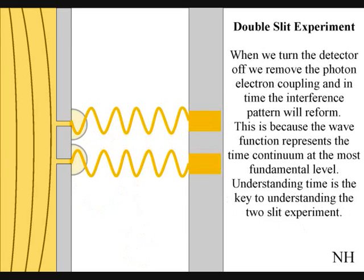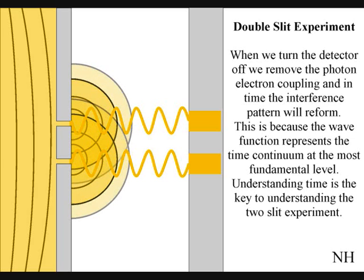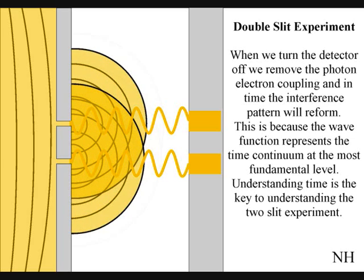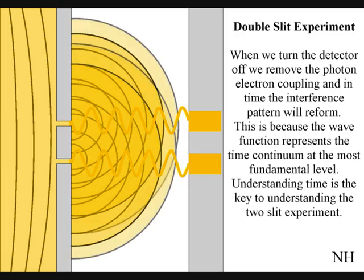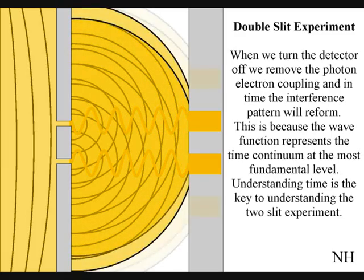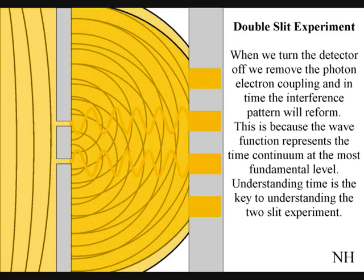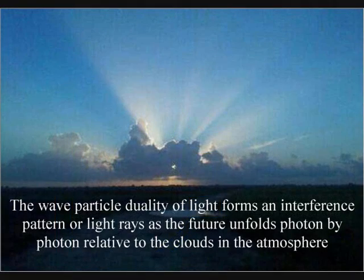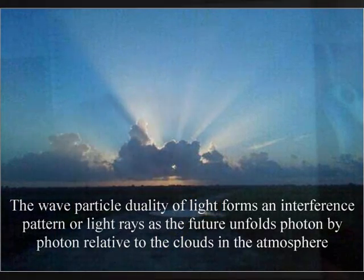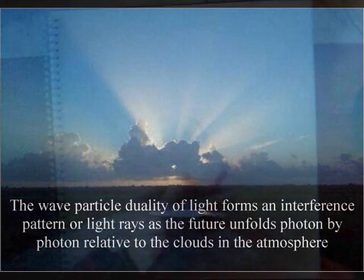If the observer turns off the electronic detector, the interference pattern will reform over a period of time, photon by photon. In this theory we have a universal interactive process. The same interference pattern can be seen when sunlight breaks through clouds, forming rays of sunlight, with the future unfolding relative to the clouds and the waves of light.